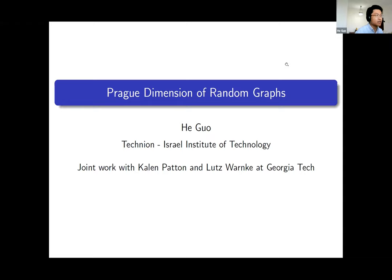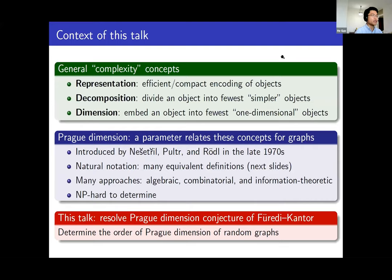This talk is about the proc dimension of random graphs. Before I give you the formal definition of proc dimension, let me give you some high level idea. Proc dimension is related to three concepts: the representation problem, where people try to encode objects efficiently; the decomposition problem, where people try to divide an object into a smaller number of simpler objects.